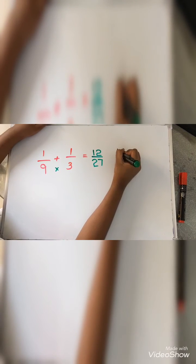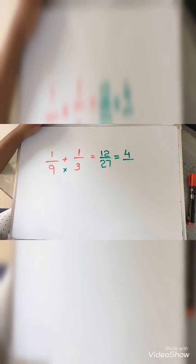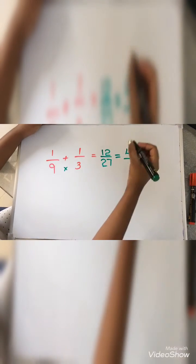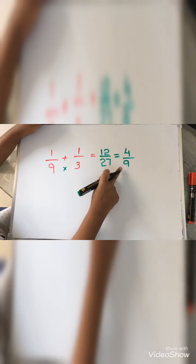So I am going to write 4 over here. And 9 times 3 is 27. So I am going to write 9 over here. The lowest form is 4 by 9.